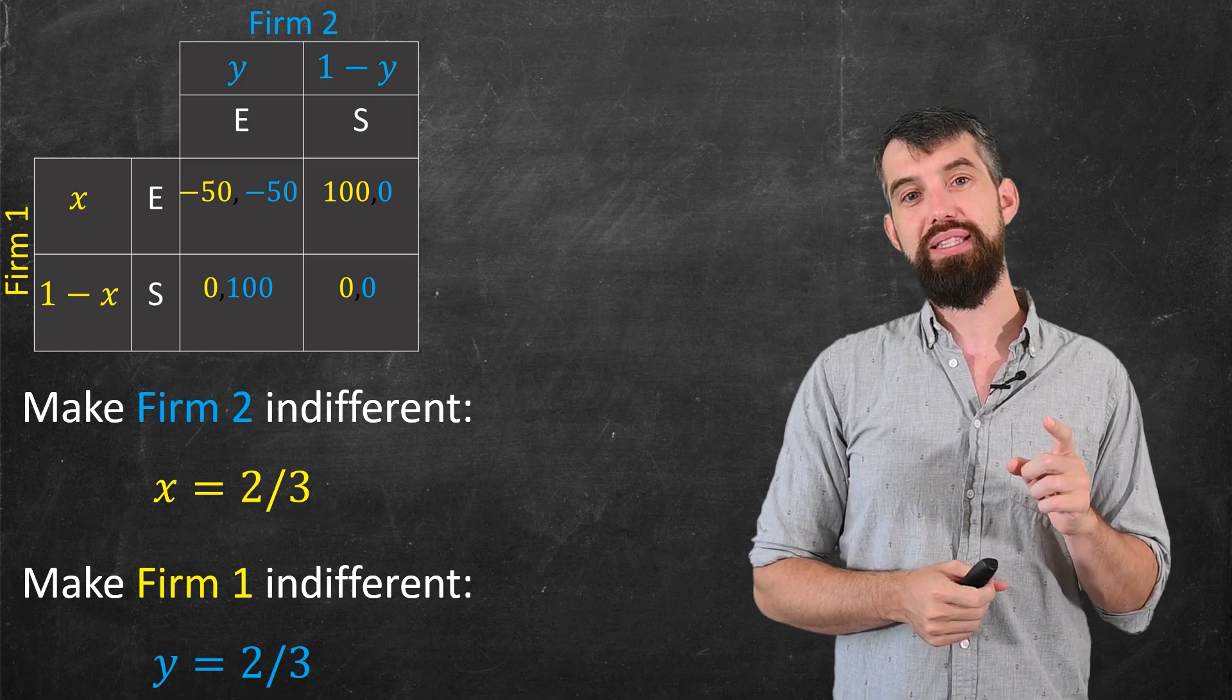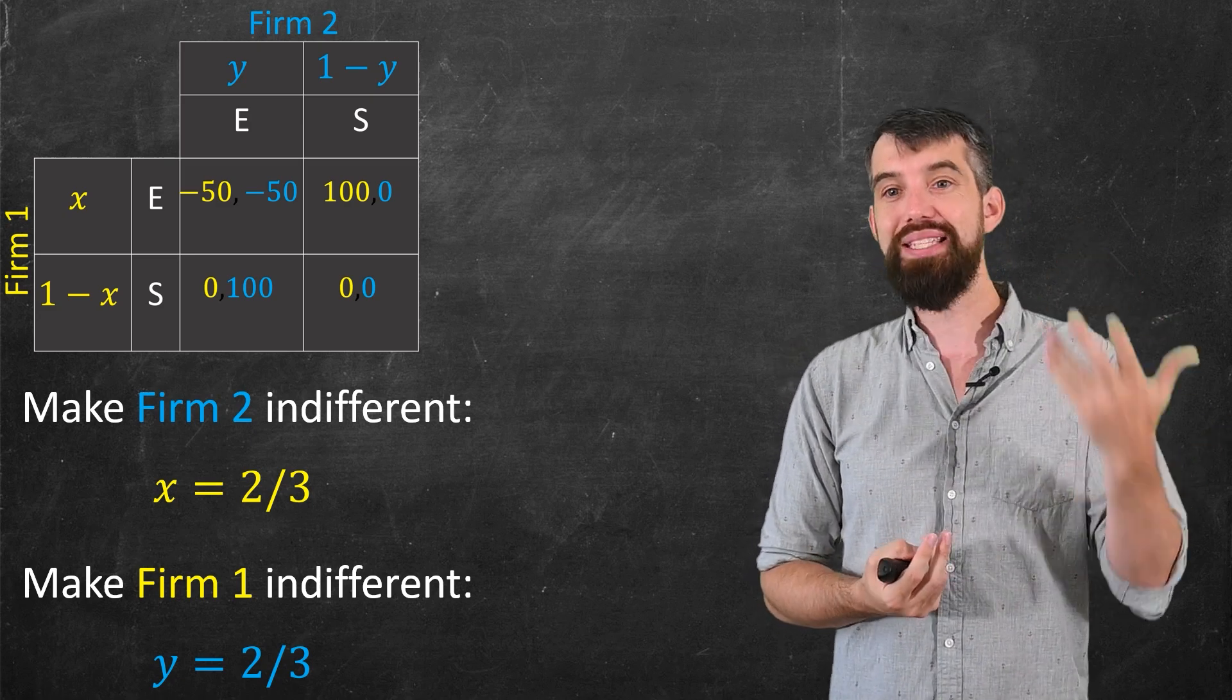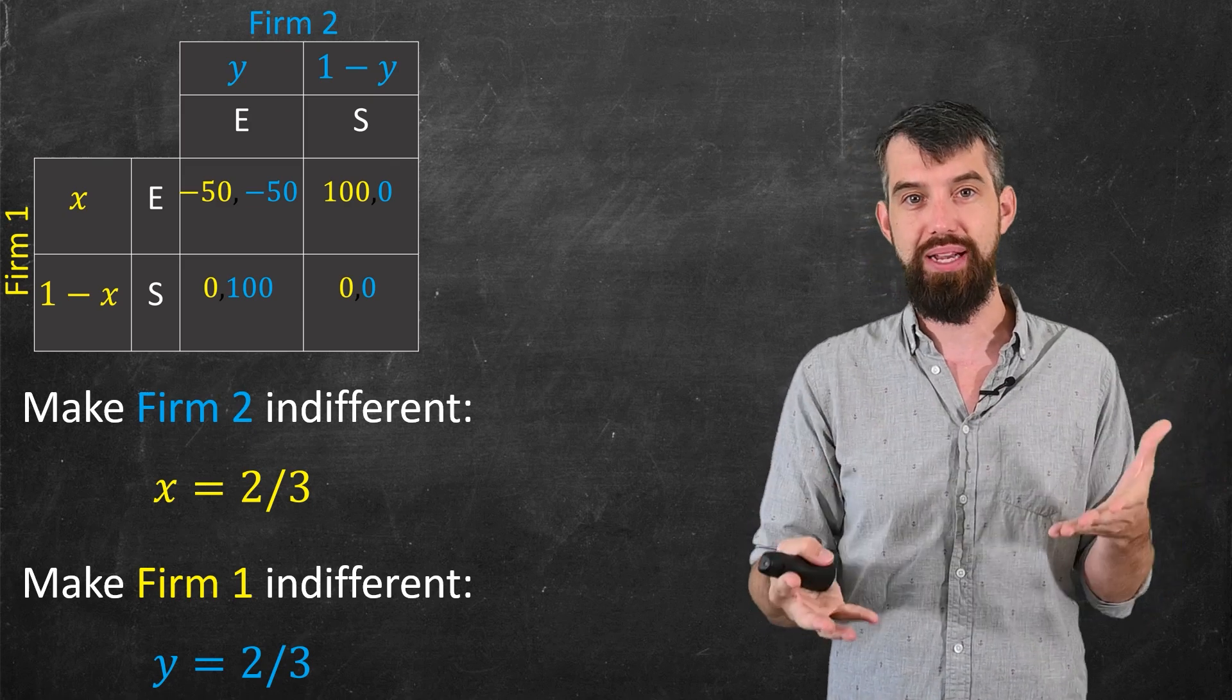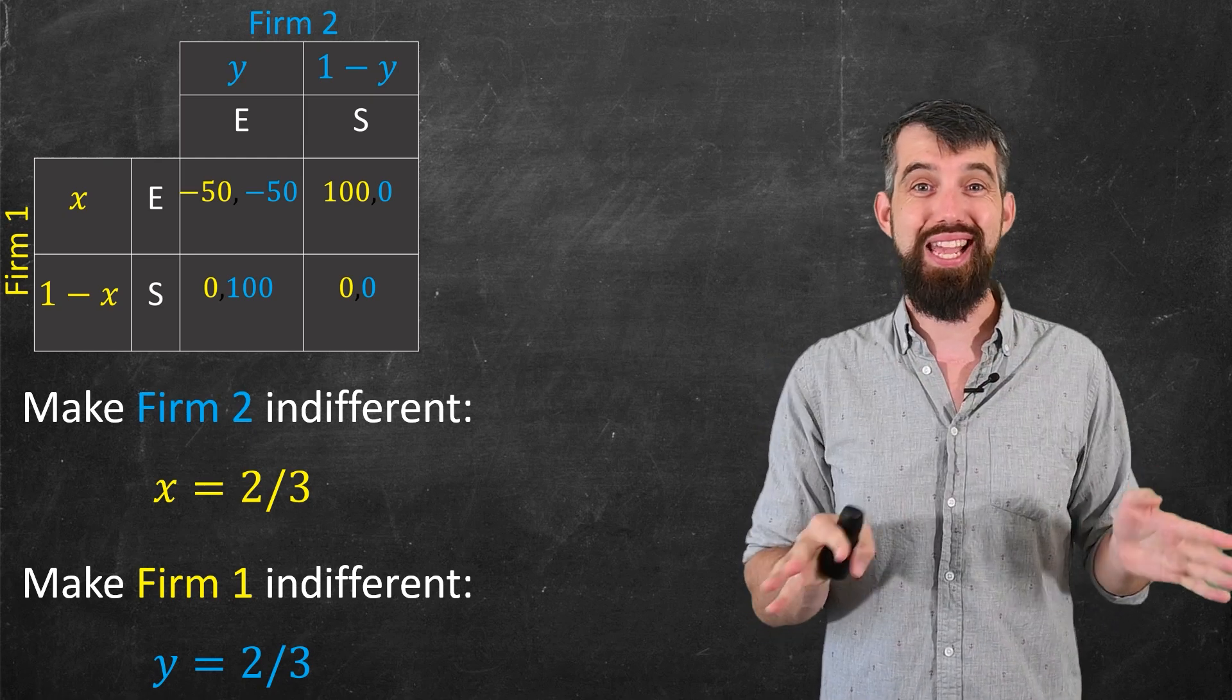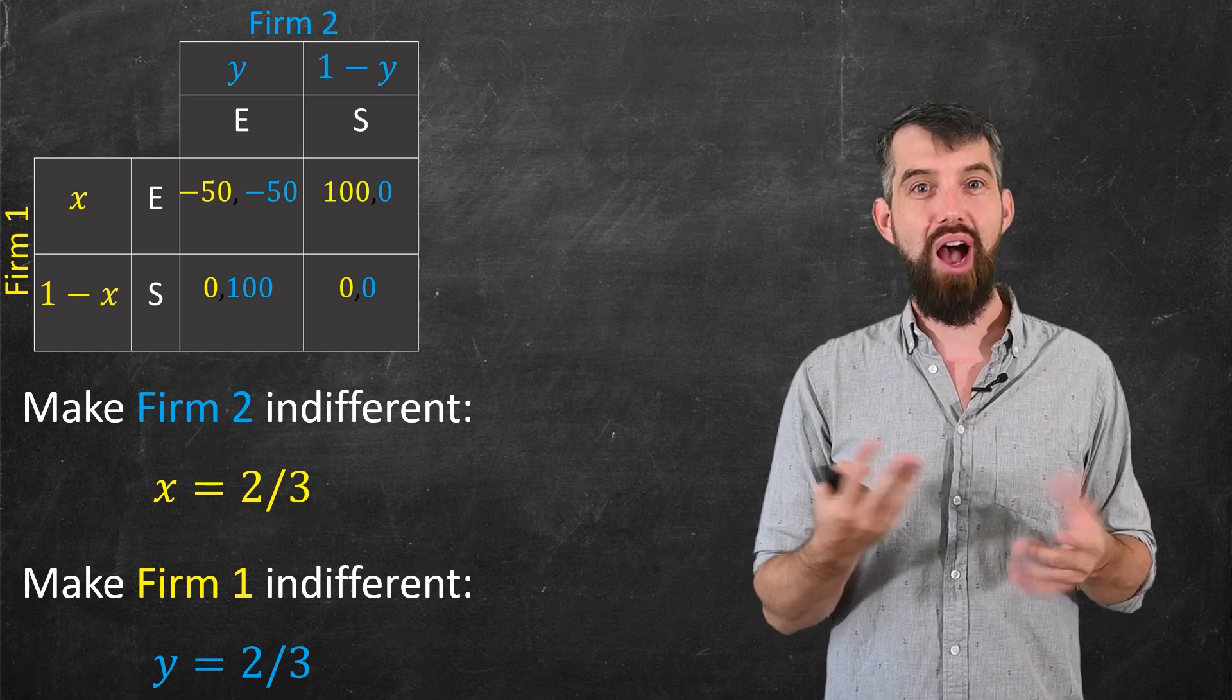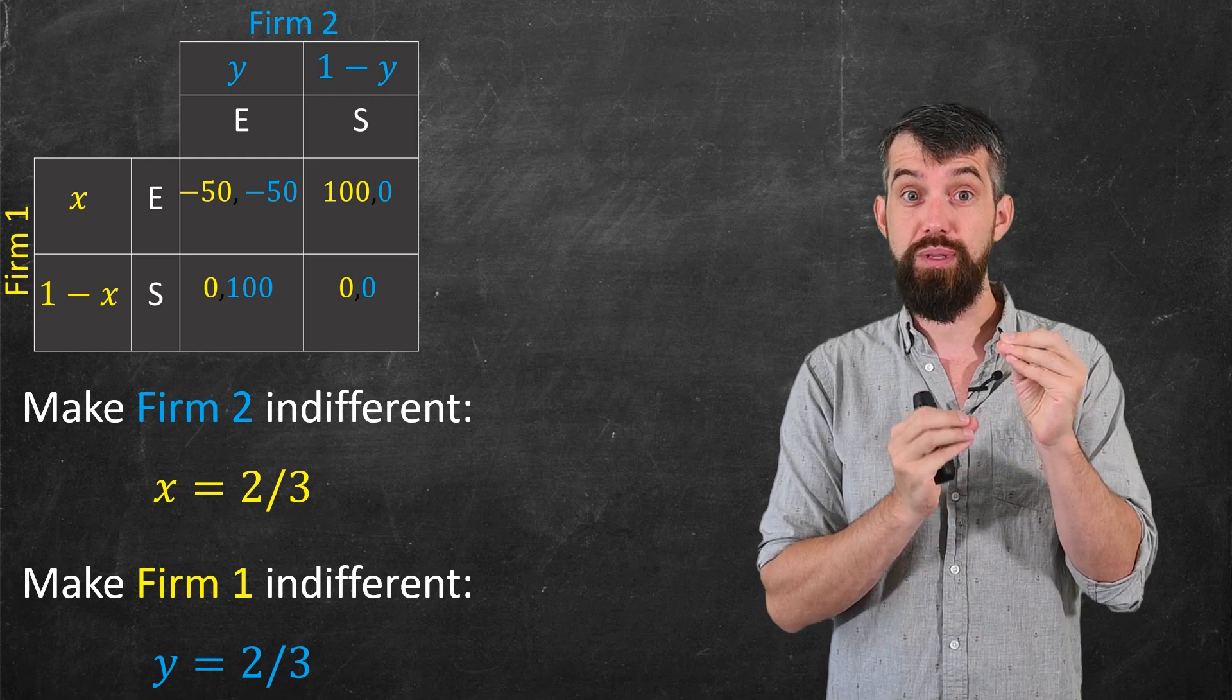And the real key here is that if one player plays at this two-thirds rate, the other player is just completely indifferent. It doesn't matter what they do. They could always enter, in which case one-third of the time they'd win the 100 units, and two-thirds of the time they'd lose the 50 units, which just adds up to zero expectation. But if they ever decided to deviate, say one of the firms was like, I'm just going to stay out, I'm never going to bother expanding, my expected payoff was zero anyway, so I'm just going to stay out and just be at zero, then the other firm could respond to that and be like, oh well, if they're not ever going to enter the market, I'll just enter the market 100% of the time. It's only when they're playing at that two-thirds amount that both firms become indifferent.